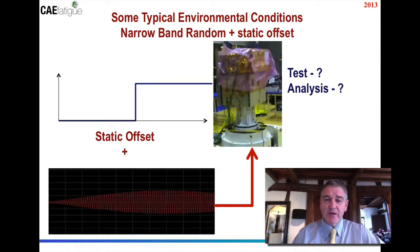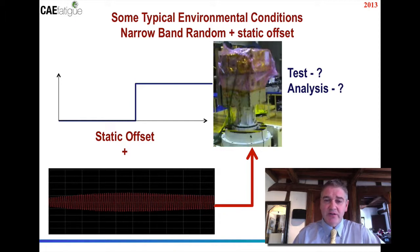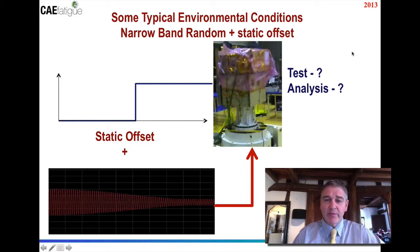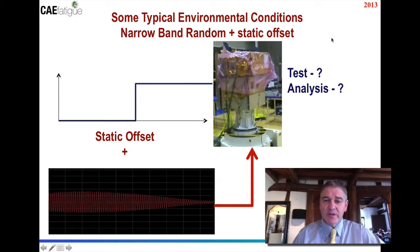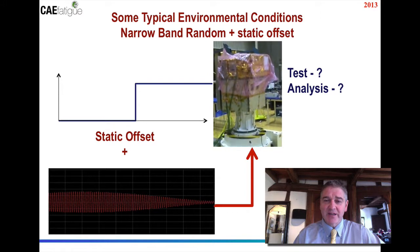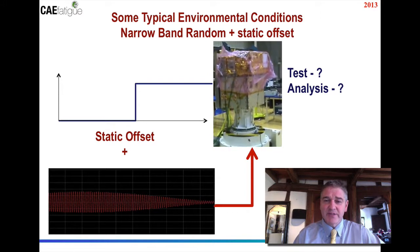What happens when we take one of those load applications — either a sine sweep or narrowband random — and try to include with that a static offset? This poses problems for both a test procedure and an analysis procedure, so this isn't particularly easy to do with current methods.